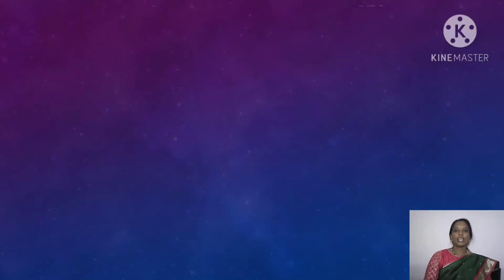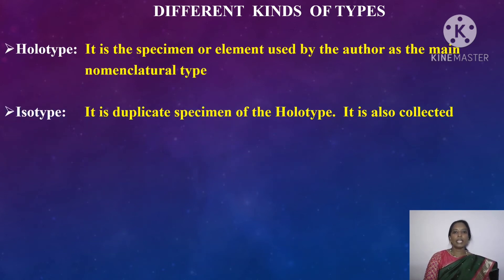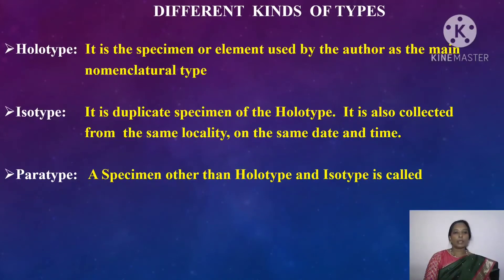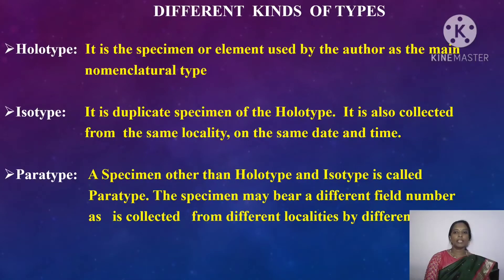Different kinds of types: First, holotype — it is the specimen or element used by the author as the main nomenclature type. Next, isotype — it is a duplicate specimen of the holotype, also collected from the same locality on the same date and time. Paratype — a specimen other than holotype and isotype; it may bear a different field number as it is collected from different localities by different collectors.